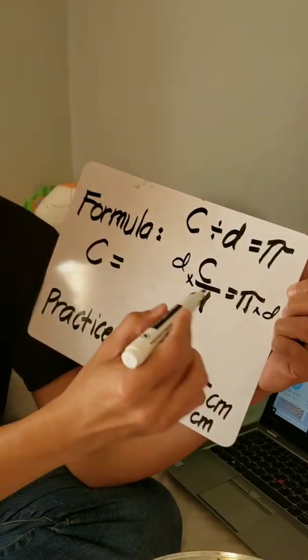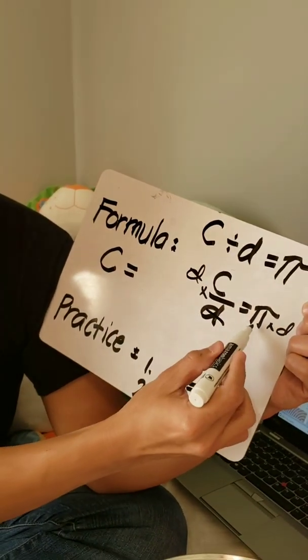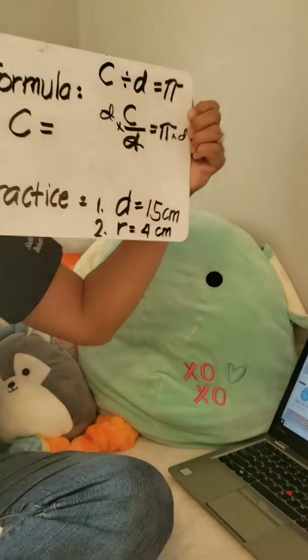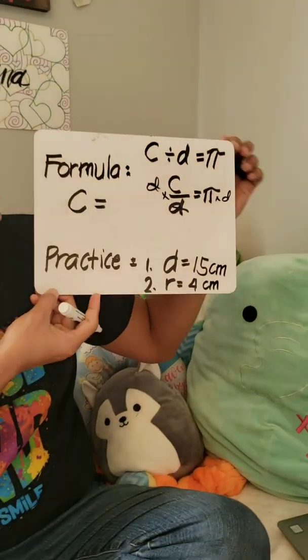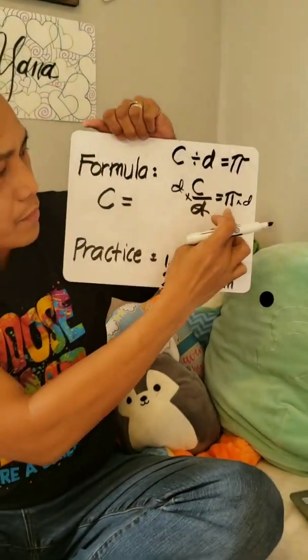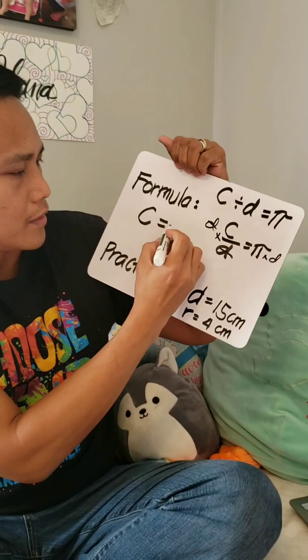As you see, on the right side, we already have pi times diameter. See? Do you follow the derivation? Therefore, we can say that circumference is pi times diameter. That's our first formula.